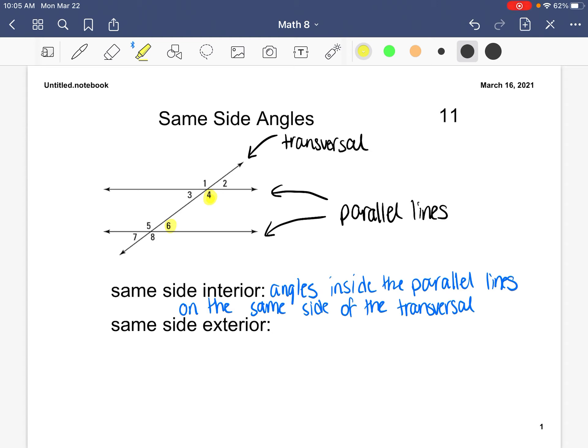So for example, angle 4 and angle 6 and also angle 3 and angle 5, and those are our only options for same side interior angles.